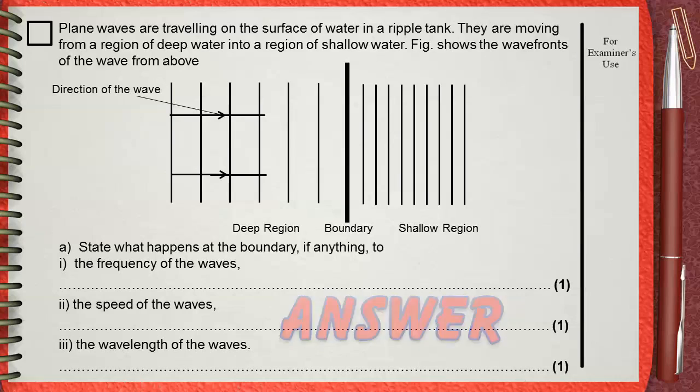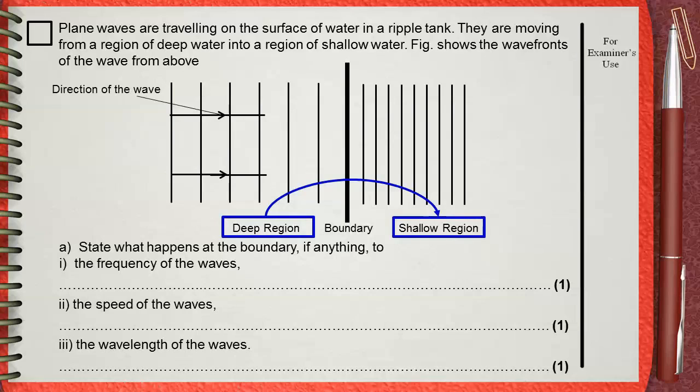We know that when water waves move from a region of a certain depth to another region of different depth, refraction will take place. When the wave falls perpendicular to the boundary, there will be no change in direction. To answer this question, we must know if our wave is coming from deep to shallow or from shallow to deep. The answer will be different. In our case, it's clear that the wave is moving from deep region to shallow region, perpendicular to the boundary separating the deep and the shallow.